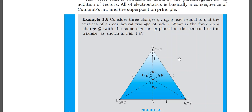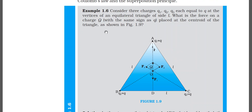Now there is an example based on multiple charges — example 1.6. Consider three charges Q1, Q2, Q3, each equal to Q, placed at the vertices of an equilateral triangle of side L. What is the force on a charge capital Q — with the same sign as the small q — placed at the centroid of the triangle, as shown in figure 1.9?